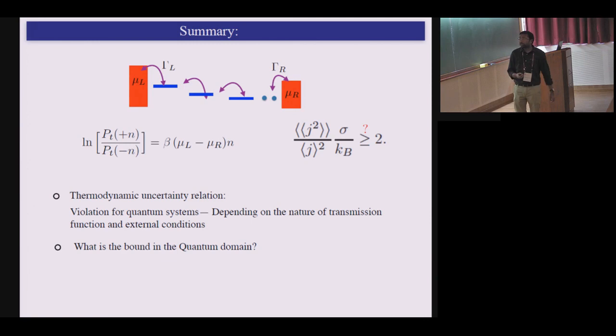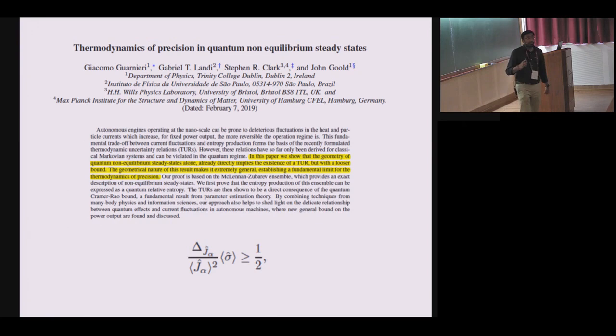So the uncertainty relation can get violated if you have a quantum system, or if you have non-Markovian dynamics. And the question that you can ask is, is there a type of a new bound that you can get for quantum systems? And in fact, in that direction, there is a very recent paper that just came out on arXiv, and if you are interested. All right. So with that, thank you.